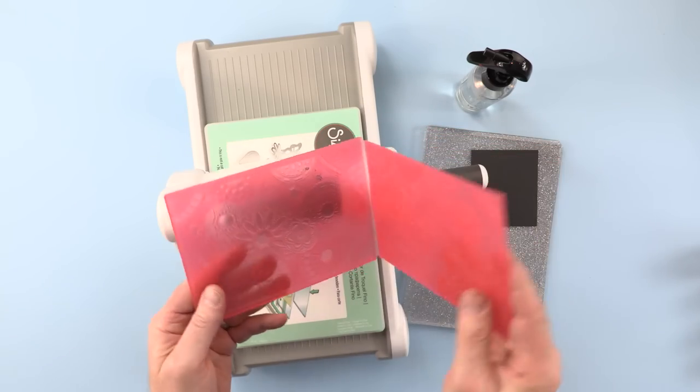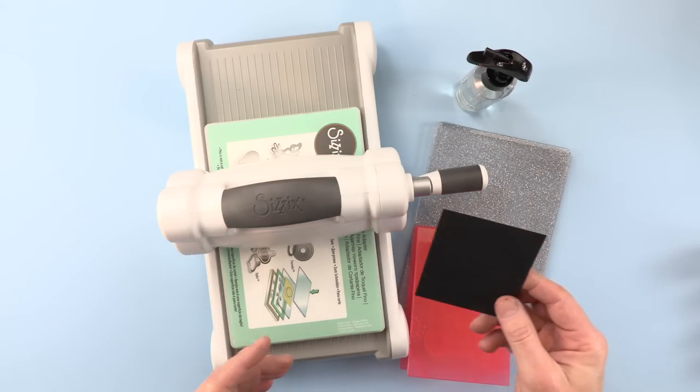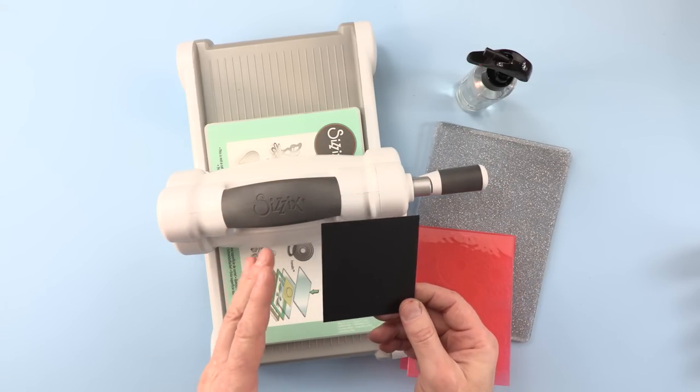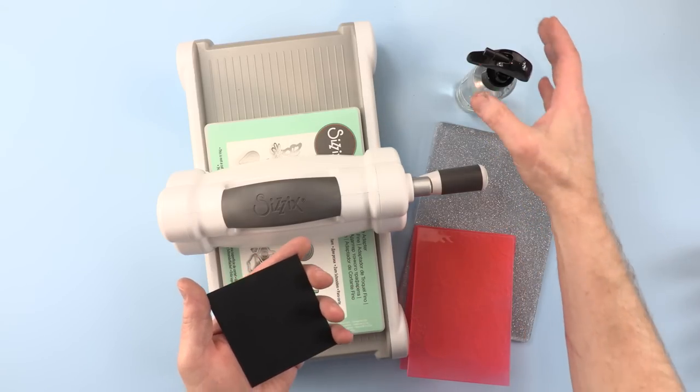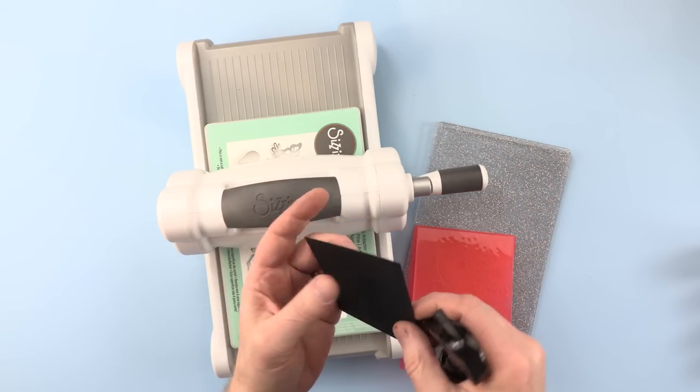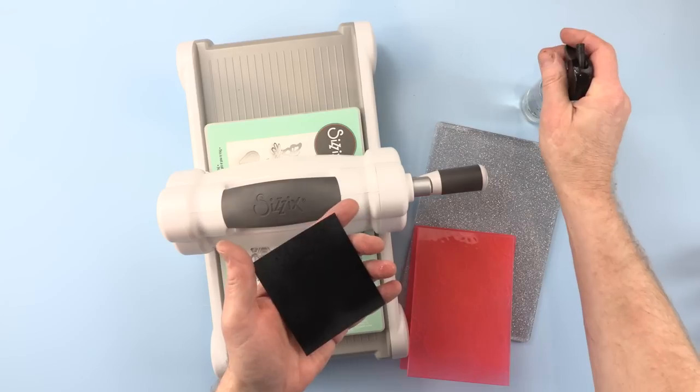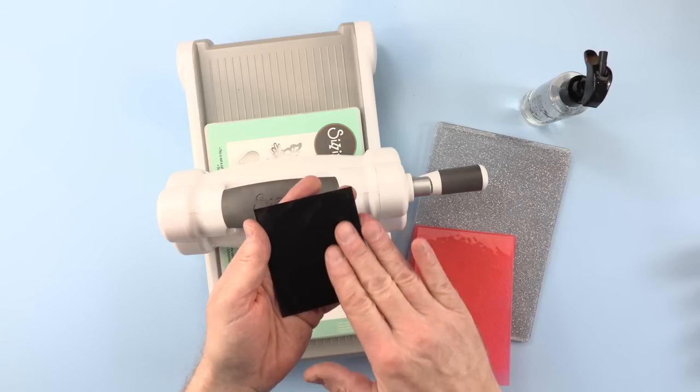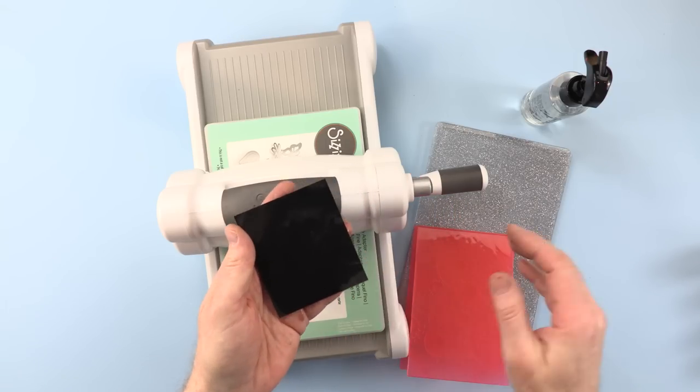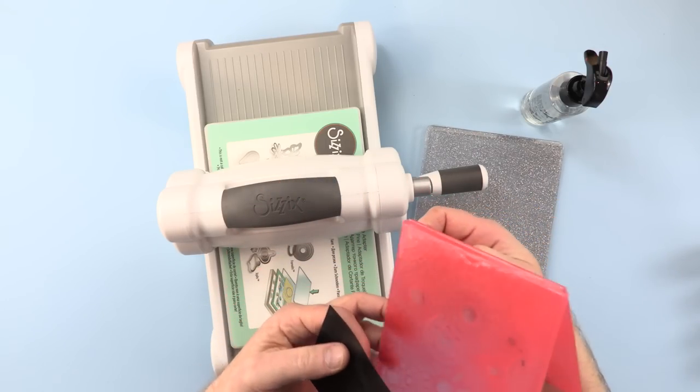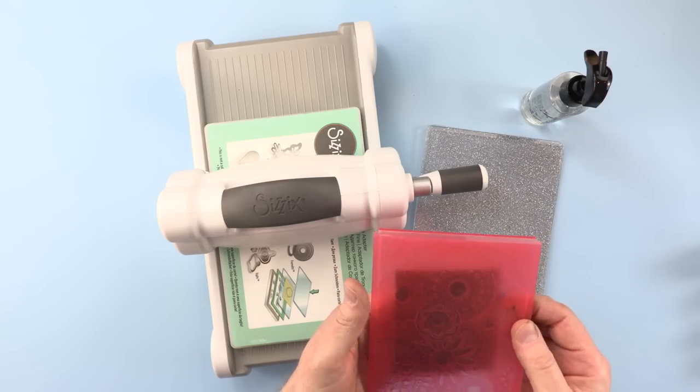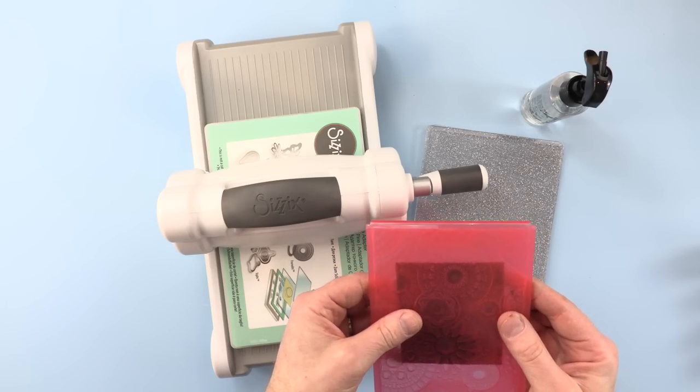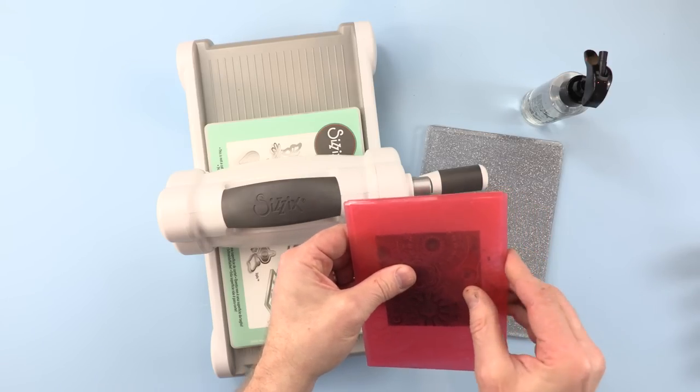Now what I'm going to do, I'm going to emboss a piece of black card. And what we always recommend when you're embossing any cardstock with 3D, I'm going to spritz that with a little bit of water on both sides. I'll just spread that with my fingertips.